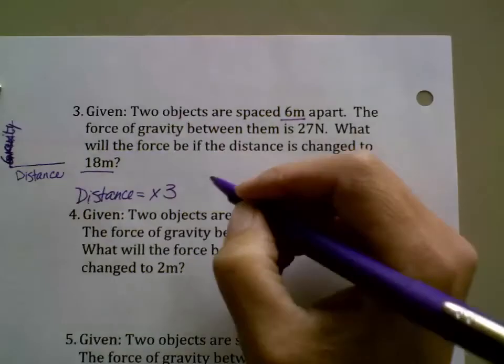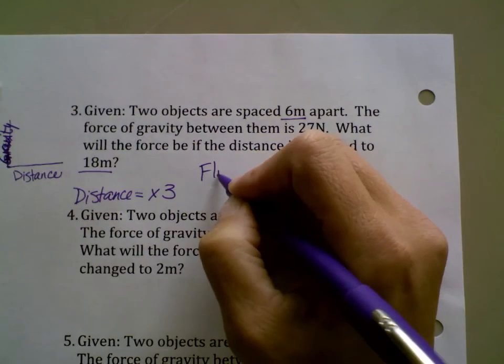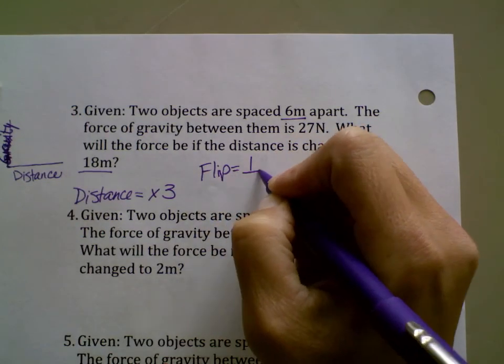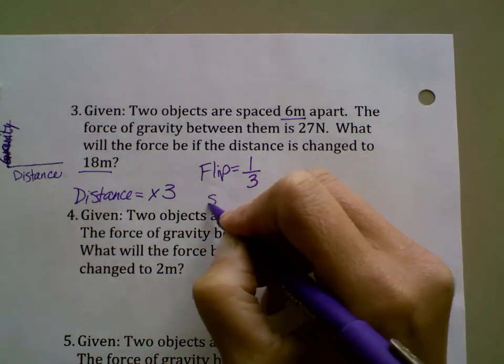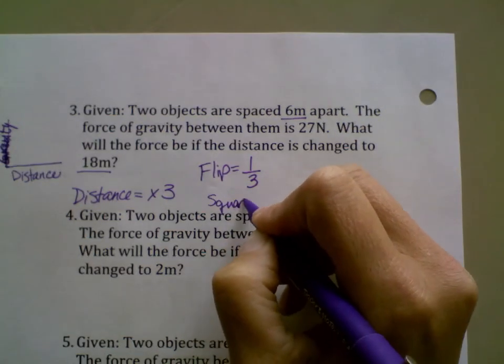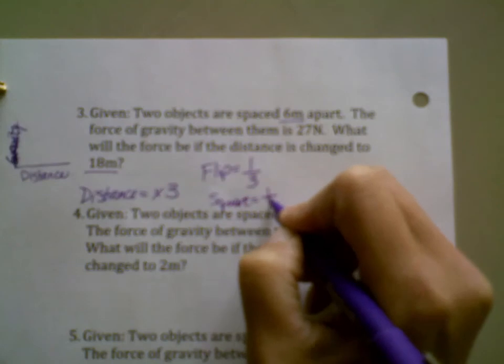So then I have to do an inverse or a flip and I get myself 1/3. Then I'm going to square that number and I get 1/9.